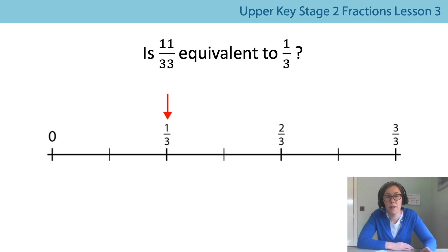Here's a tricky question for you. Is eleven thirty-thirds equivalent to one third? So what did we do? We do what we did with one third. So there's eleven thirty-thirds. And then we did times by three. Now using your times table knowledge, does that work? Because here you're counting. So eleven, twenty-two, thirty-three. That's three times eleven. So yes, that means that eleven thirty-thirds is equivalent to one third.